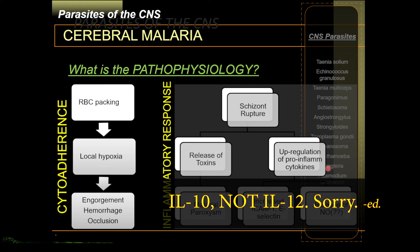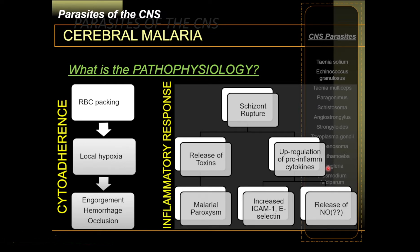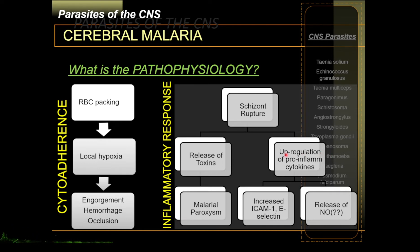IL-10 levels also decrease in cerebral malaria. Upregulation of pro-inflammatory cytokines increases the production of ICAM-1 and E-selectin — adhesion molecules of the human body. So in cerebral malaria, it is not enough that you have more inflammatory cytokines; these cytokines also increase pro-adhesion molecules, which would complicate and actually enhance the cytoadherence arm of the pathophysiology.